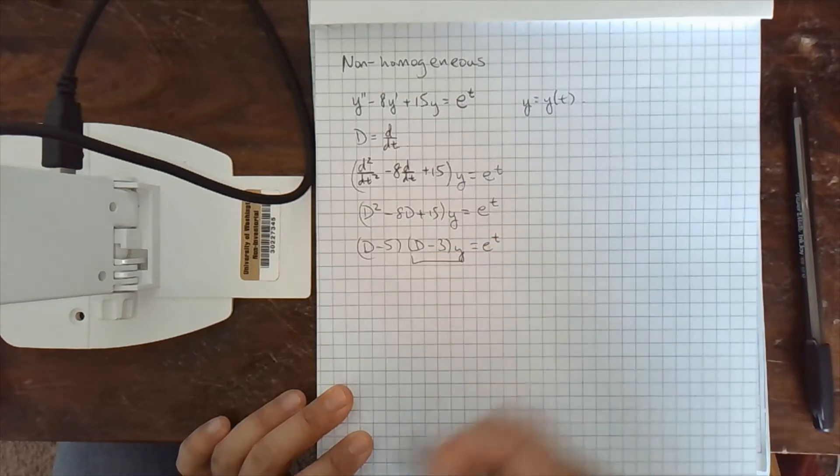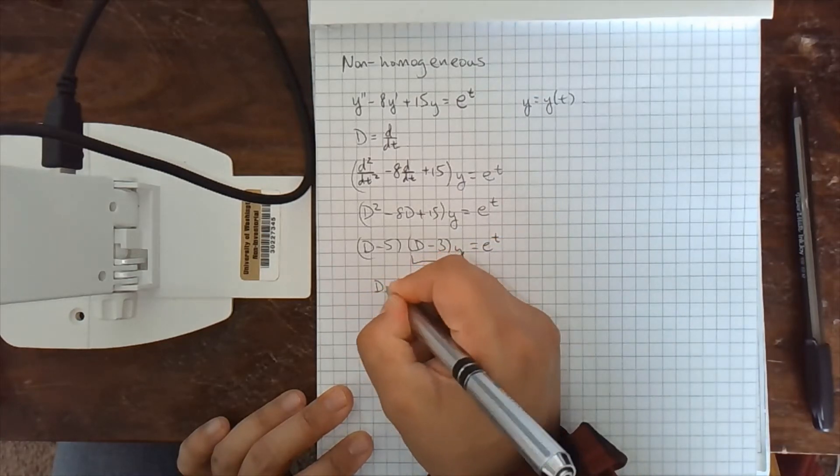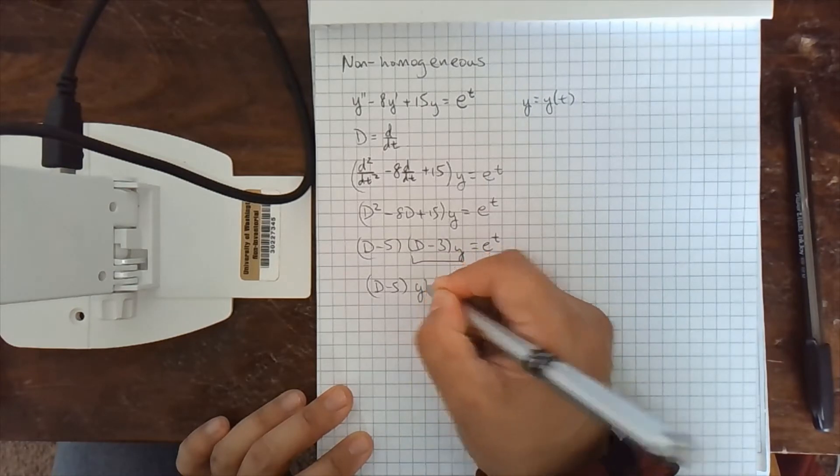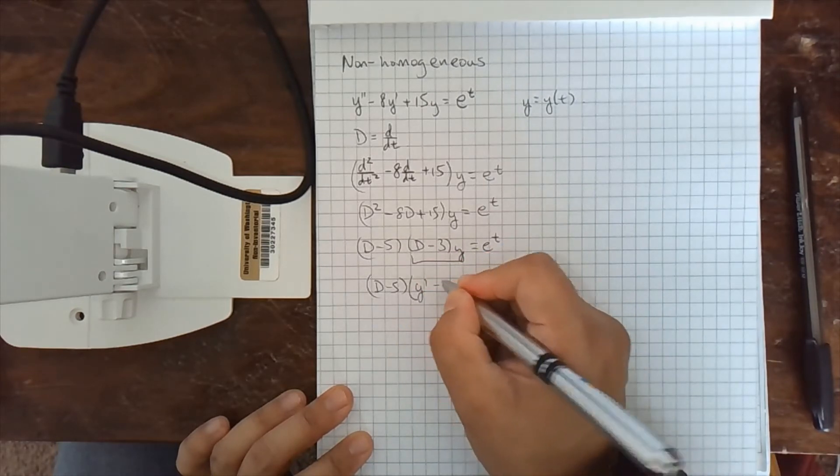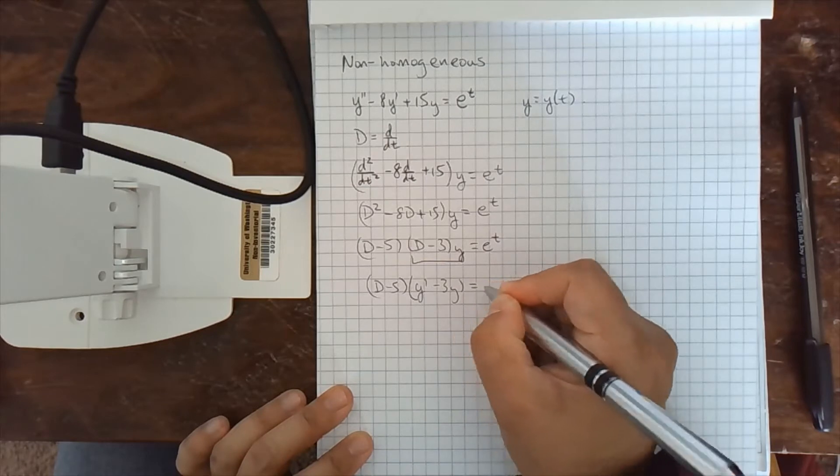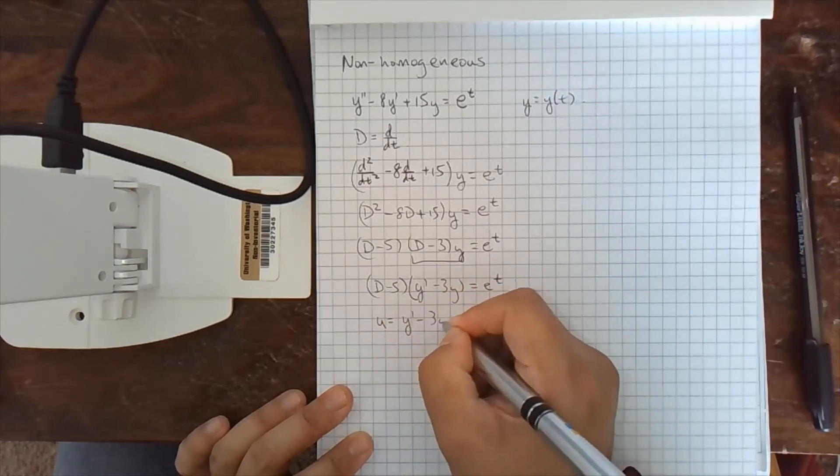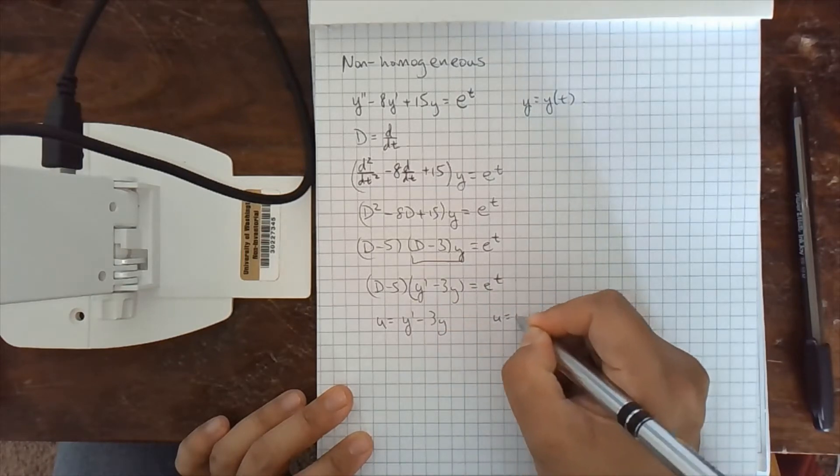And remember I can distribute one of these. So d minus 5. This is dy is y prime because y is a function of t minus 3y equals e to the t. And now I'm going to set u equal to y prime minus 3y. So u is also a function of t.